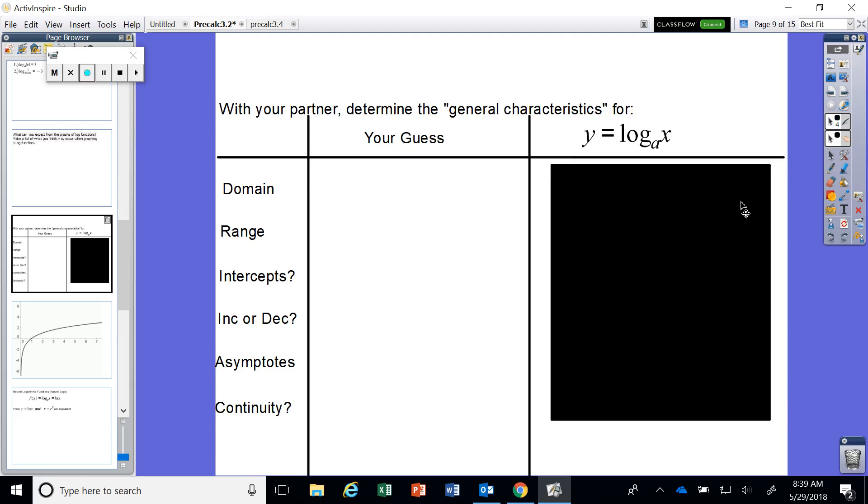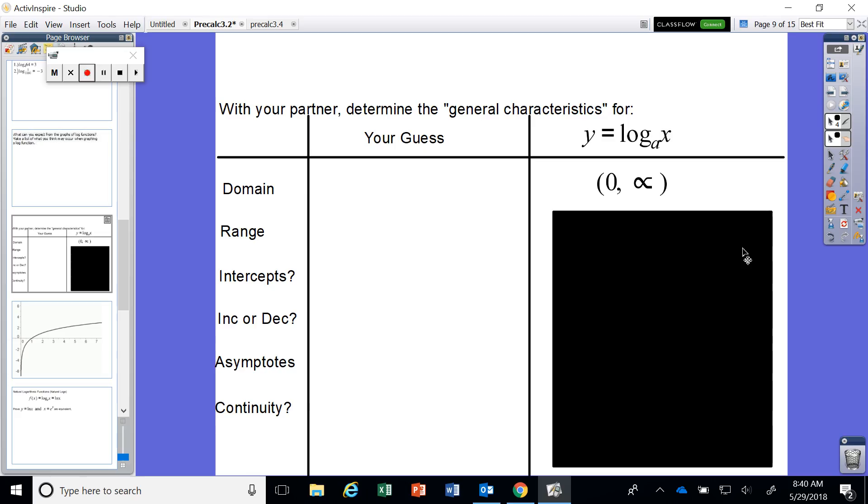So what'd you guys come up with? What about the domain? Well, think about it. We know it's the inverse of our exponential function. The exponential function had a domain of negative infinity to infinity. So the inverse of a negative infinity to infinity domain should look at the range of the exponential function. The domain of our inverse is the range of our original. So we should be looking at a domain from zero to infinity, because that was the range of our exponential function.